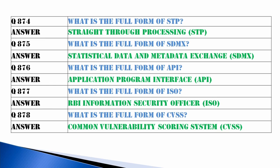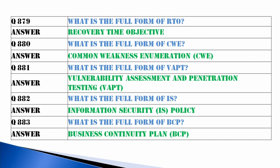What is API? Application Program Interface. What is ISO RBI? Information Security Officer. What is CVSS? Common Vulnerability Scoring System. What is RTO? Recovery Time Objective.